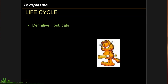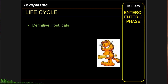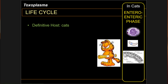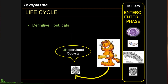The definitive host for Toxoplasma are cats, including domestic cats. Inside the cats, Toxoplasma undergoes its enteroenteric phase. Cats get infected by Toxoplasma through their oral cavity when they ingest an infected organism with oocysts. Once the oocysts reach the gastrointestinal tract, they release sporozoites, which invade the enteric enterocytes. In cats, Toxoplasma undergoes its sexual reproductive stage, resulting in an unsporulated oocyst.